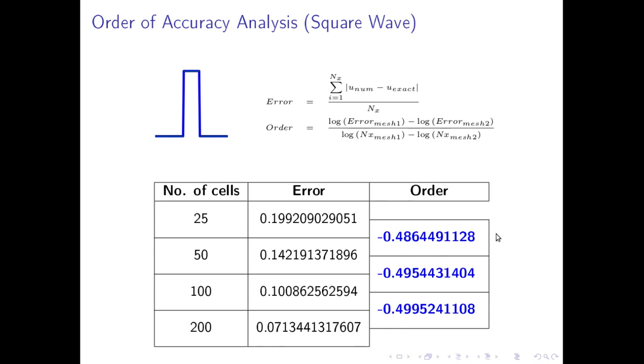This is actually not what I was expecting because this is a first-order scheme and we should have got an order of 1. Well this is because we have sharp edges within the solution, and obviously this order of accuracy analysis cannot be used for such sharp changes happening in the solution, either because of the initial conditions or because of shocks or such structures which might appear in the solution.